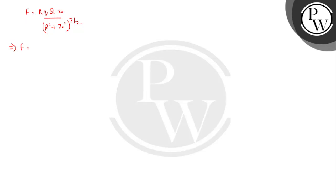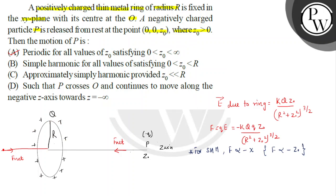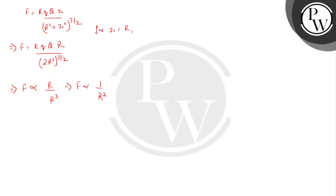Let's check option B by substituting z₀ = r. Then F is proportional to r / (r² + r²)^(3/2) = r / (2r²)^(3/2), which simplifies to show that F is directly proportional to 1/r². Since F is not proportional to z₀ but rather to 1/r², option B is wrong.